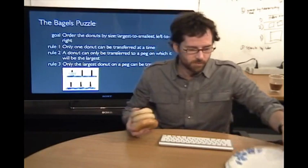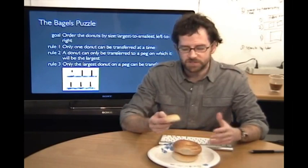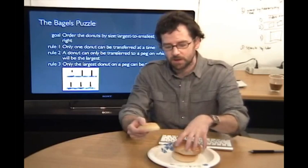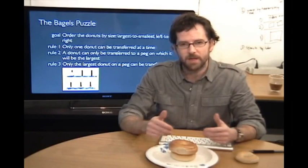You can try this at home, and what you see is that the fact that the bagels represent some of the constraints of the problem in the physical structure makes it much easier to remember the state. You don't have to remember which of these two bagels is larger, and therefore movable, because the larger one is on top. You're not going to move this medium-sized bagel that's underneath.